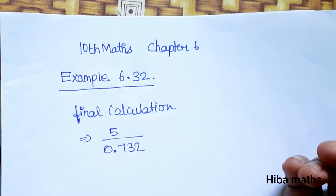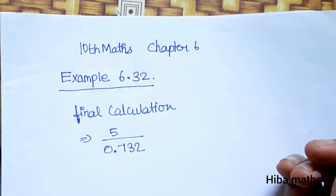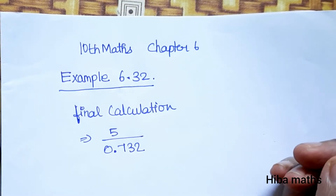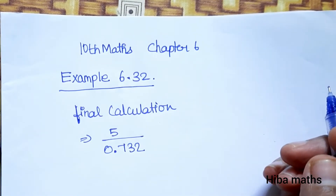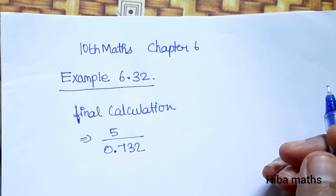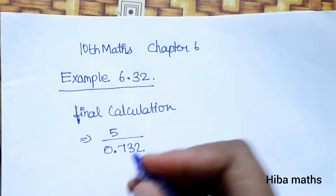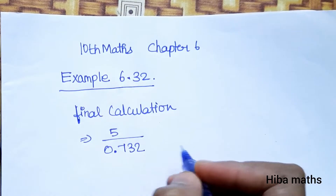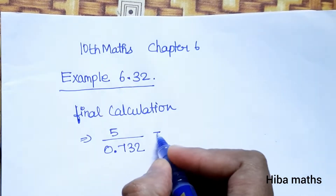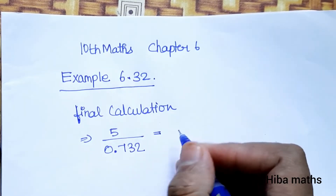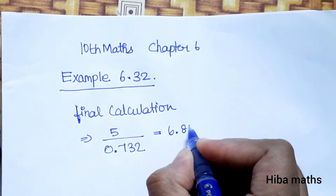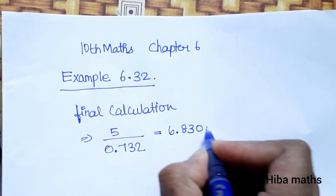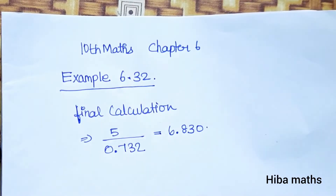Hello students, welcome to HibaMax 10th Standard Max, Chapter 6, Example 6.32. We have to do a final calculation division. The direct answer we need to find is 6.830.